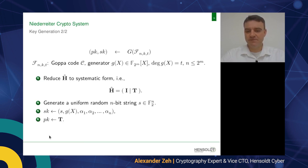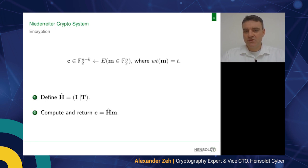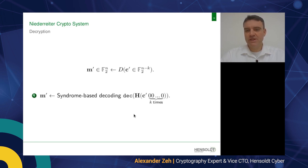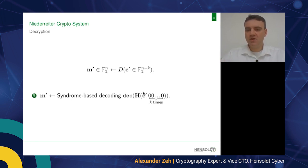The public key is the sub-matrix T. In the third step of key generation, you reduce the binary matrix H-hat to systematic form, giving two sub-matrices: the identity matrix I (mt×mt) and the remaining sub-matrix T. The secret key consists of the string s, the generator polynomial, and the sequence of n distinct elements. For encryption, given public key T you reconstruct the parity check matrix and calculate syndrome c = H·m. For decryption, you append k zeros to the ciphertext, decode using the syndrome decoder, and return the plaintext.